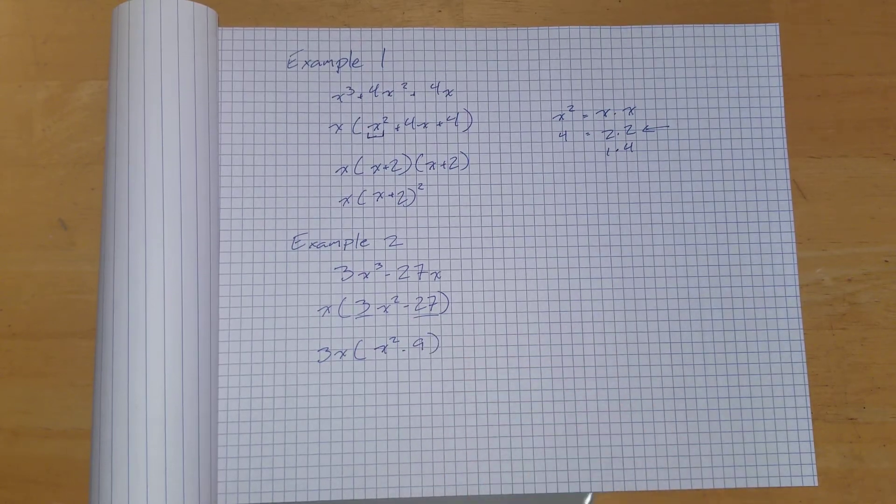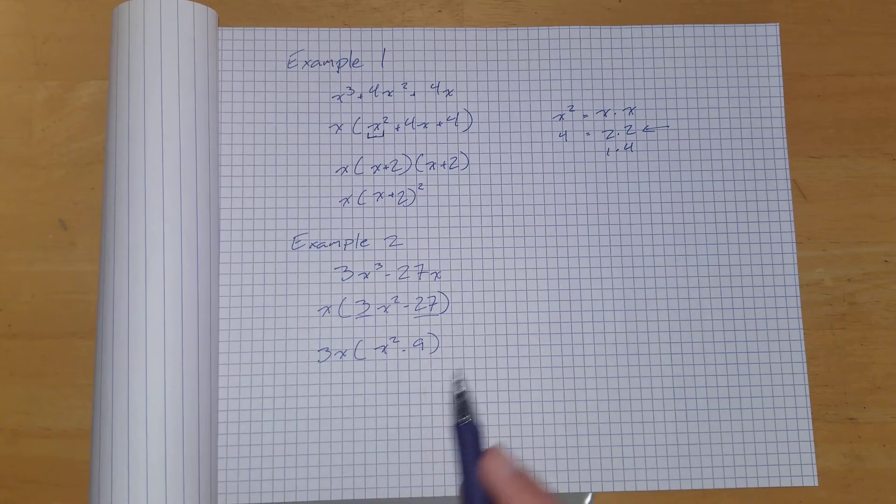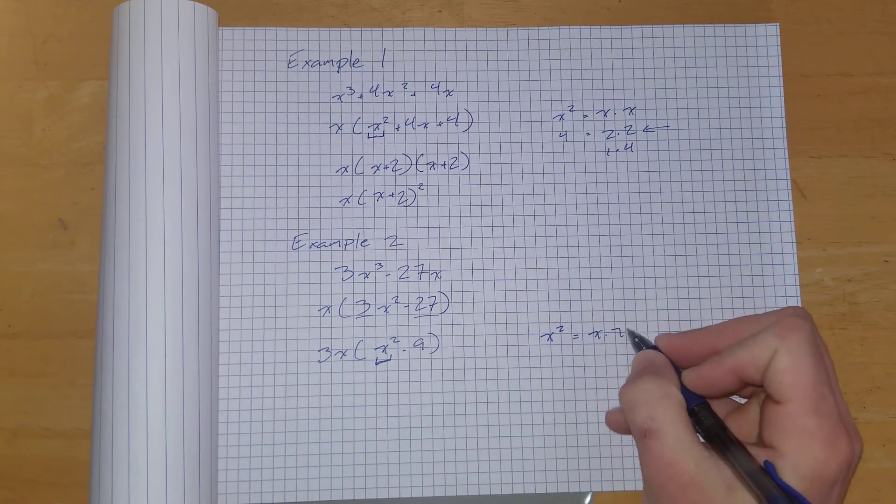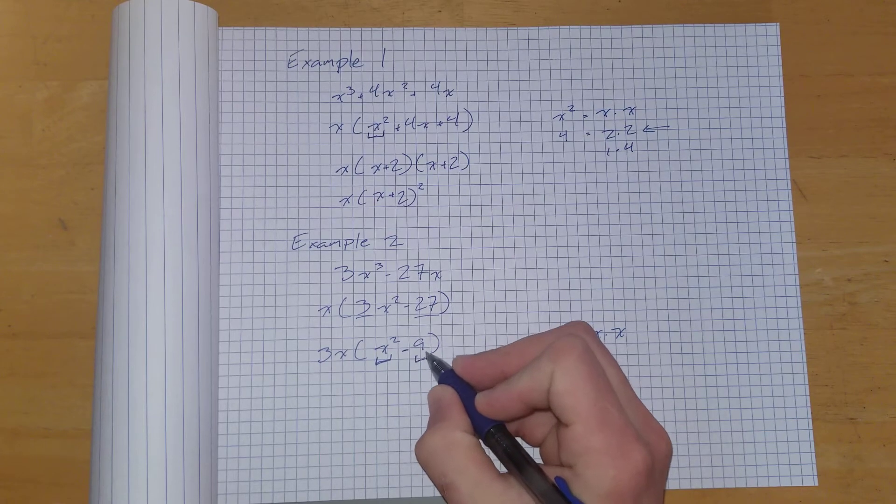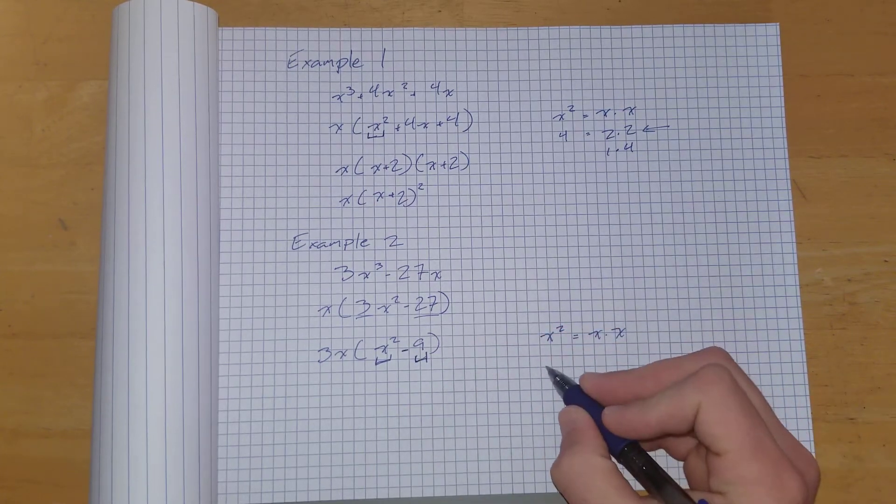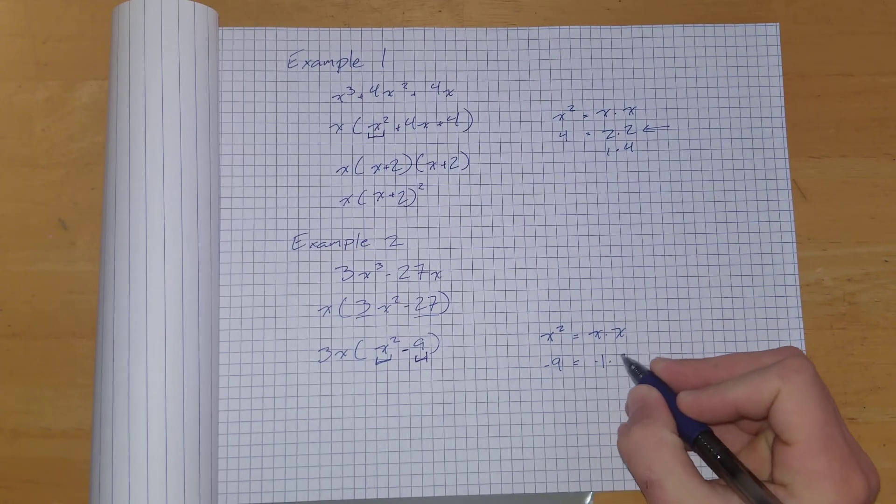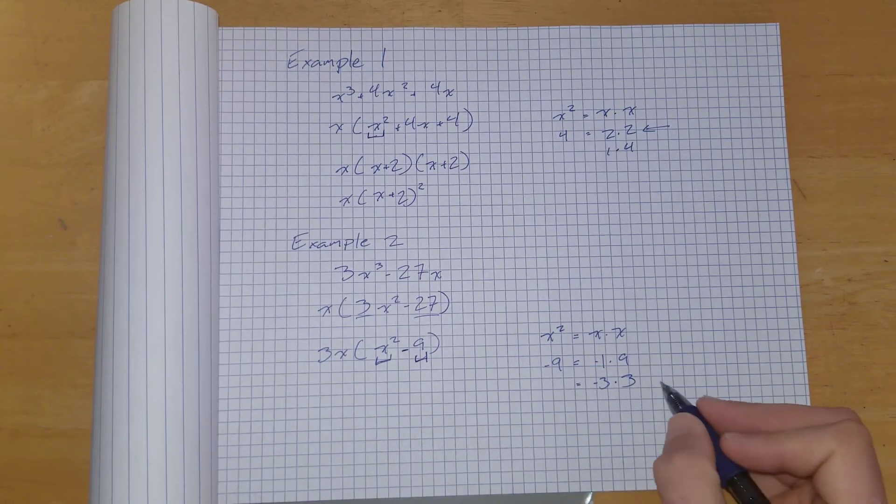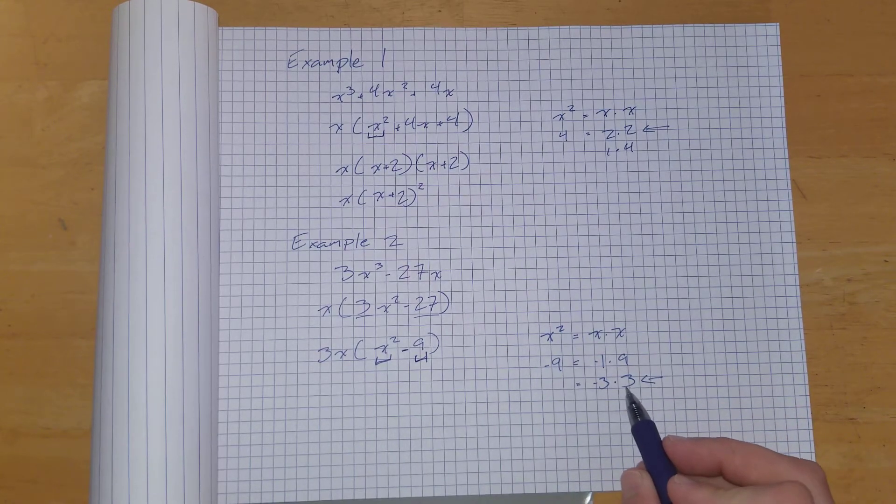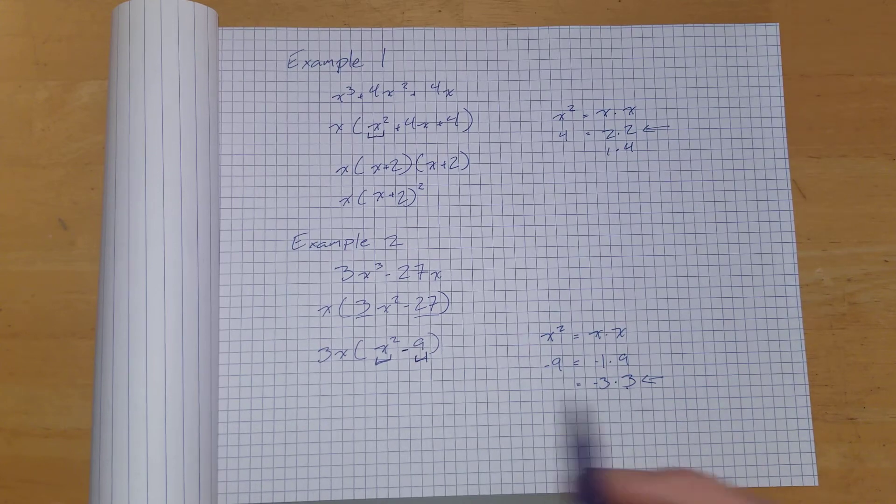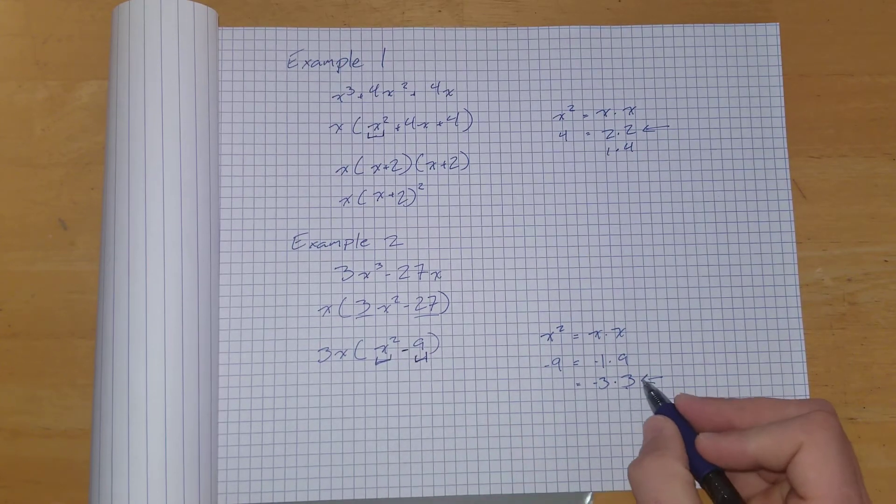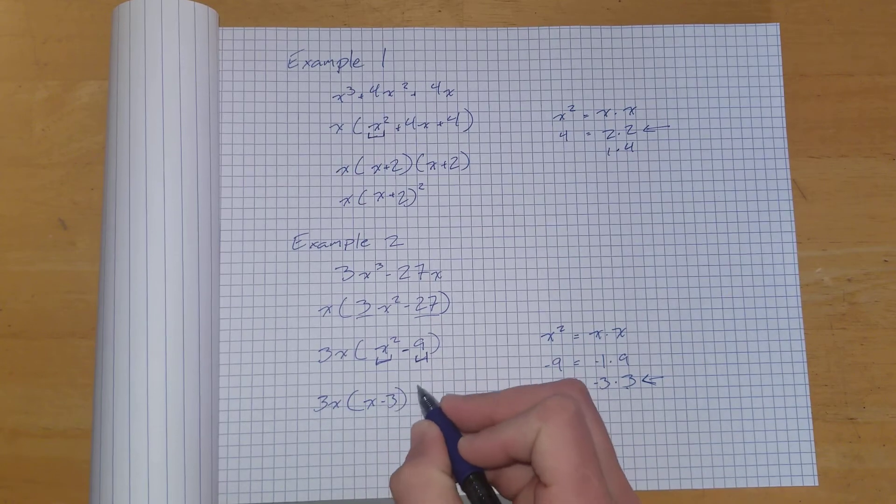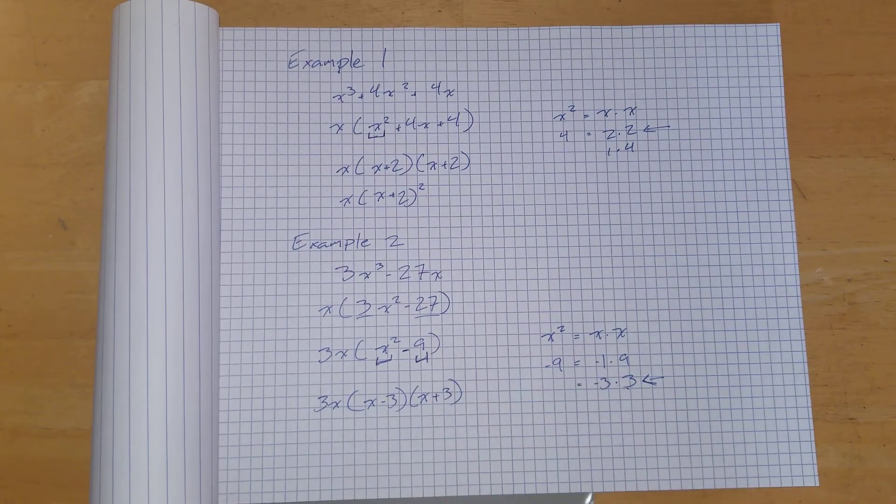3x squared minus 9. And this looks pretty familiar as well. Like here, x squared again is just x times x. And negative 9. Don't forget the negative. That's very important. Negative 9 is the product of negative 1 times 9, negative 9, or negative 3 times 3. So we're going to use this one because positive 3 minus 3 is going to give us 0. And since there's nothing here, we're just going to go with this one. So we're going to end up with 3x, x minus 3 times x plus 3. That is our answer.